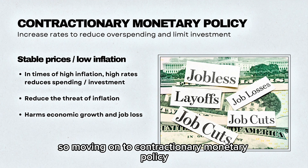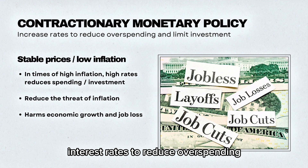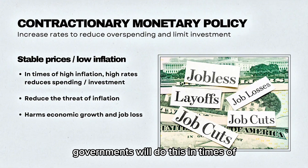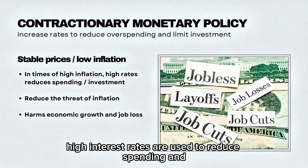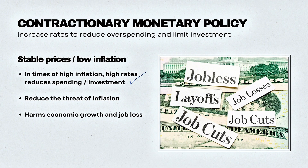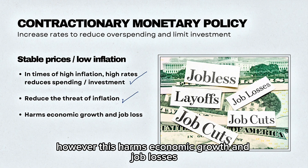Moving on to contractionary monetary policy — this is when they increase interest rates to reduce overspending and limit investment. Governments will do this in times when the economy is running hot. In times of high inflation, high interest rates are used to reduce spending and investment, which is a component of aggregate demand, and this reduces the threat of inflation within the economy. However, this harms economic growth and can lead to job losses.